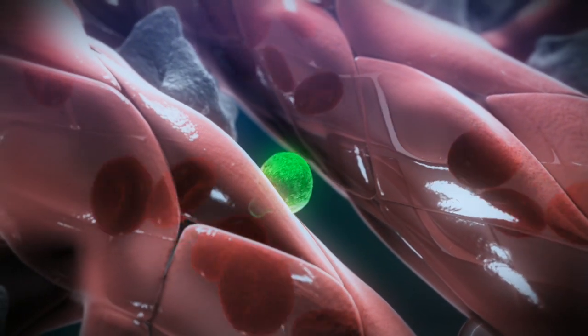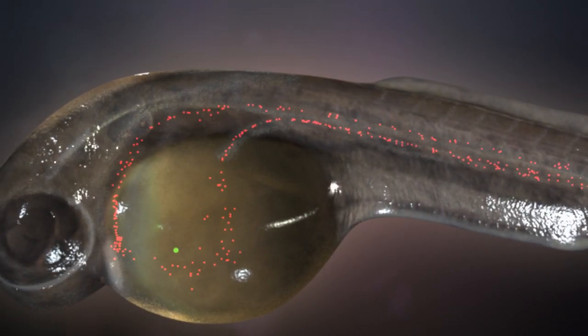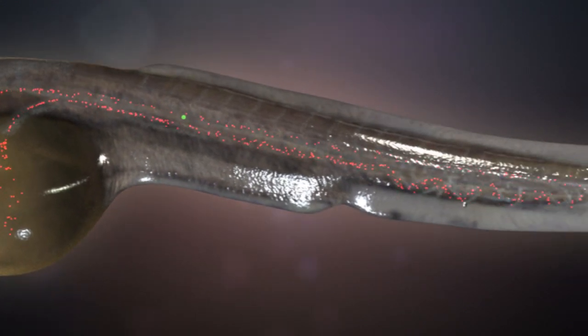This stem cell goes into the circulation and goes around and around the vasculature and ultimately will colonize the next site of blood development, which is in the tail.